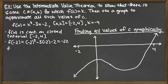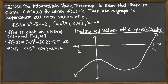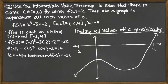Plugging in negative 2 gives us negative 22. If we plug in the other endpoint of 4, we get 4 cubed minus 3 times 4 minus 2, which gives an output value of 14. The important step is to say that K equals negative 4 is between f(negative 2) = negative 22 and f(4) = 14. So both hypotheses are met.